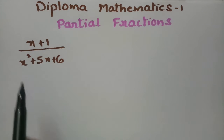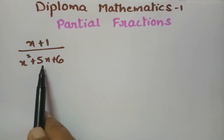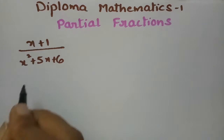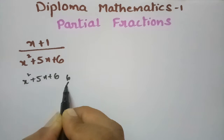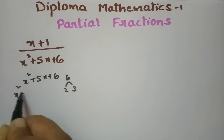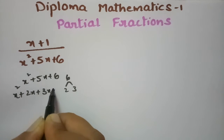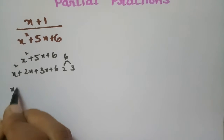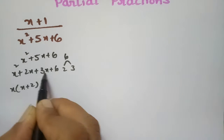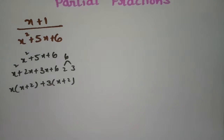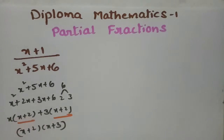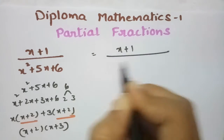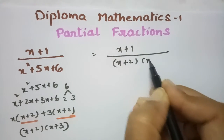Now I have to resolve the partial fraction: (x+1) / (x²+5x+6). First I split the denominator into factors. For x²+5x+6, the factors of 6 are 2 and 3, so I can write x²+2x+3x+6. Taking x common gives x(x+2), and taking 3 common gives 3(x+2). Taking (x+2) common from both, this becomes (x+2)(x+3). So I can write this as (x+1) / [(x+2)(x+3)].